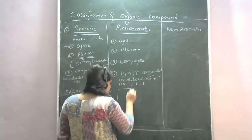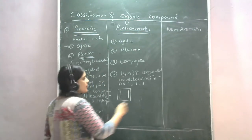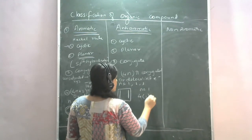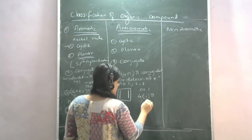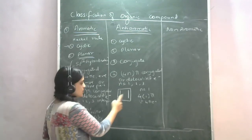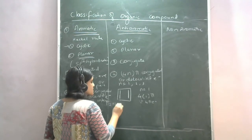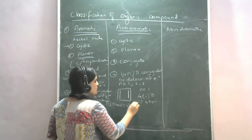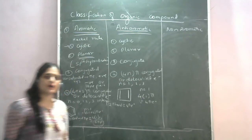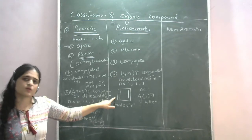Let us take the example of cyclobutadiene. If we take N = 1, then 4N = 4(1) = 4 pi electrons. This structure has 2 pi bonds, meaning 4 pi electrons. Since N = 1 gives 4 pi electrons and the structure has 4 pi electrons, this compound is anti-aromatic.